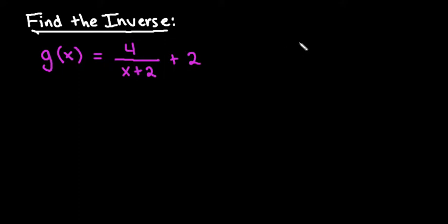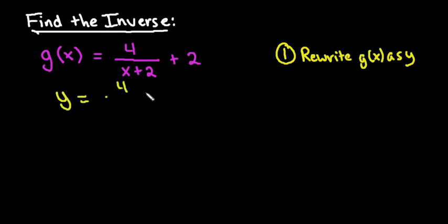As far as finding an inverse goes, it doesn't matter what type of function you're dealing with. Your first step is always going to be to rewrite whatever your function letters are, in this case I have g of x, as y. So I'm going to rewrite this as y equals 4 over x plus 2 plus 2. And the reason I do that is y is easier to write over and over again than g of x.